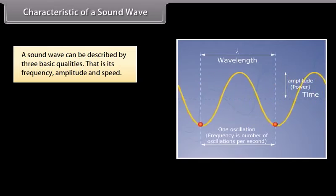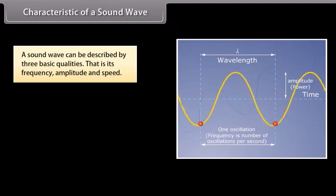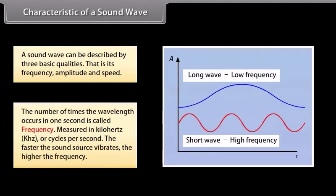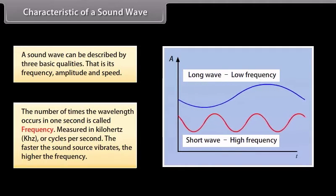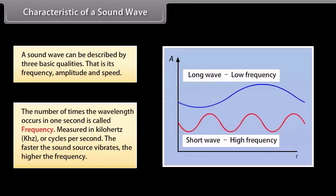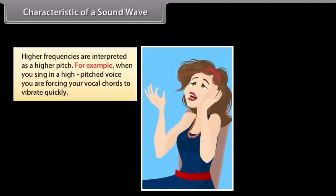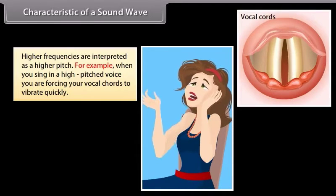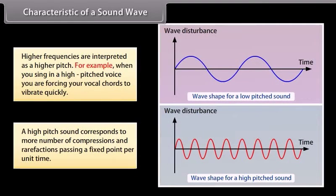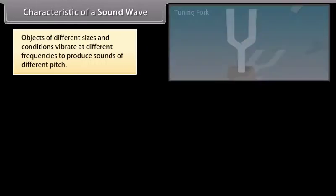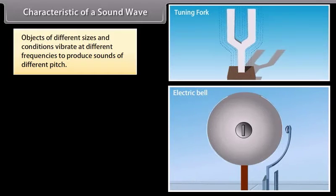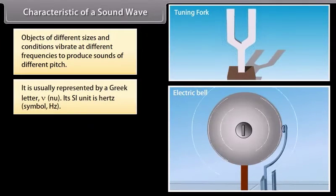Characteristics of a sound wave. A sound wave can be described by three basic qualities: its frequency, amplitude and speed. The number of times the wavelength occurs in one second is called frequency. It is measured in kilohertz or cycles per second. The faster the sound source vibrates, the higher the frequency. Higher frequencies are interpreted as a higher pitch. For example, when you sing in a high pitched voice, you are forcing your vocal chords to vibrate quickly.